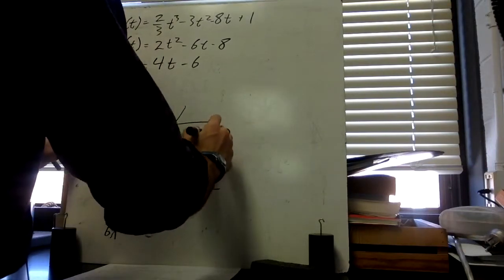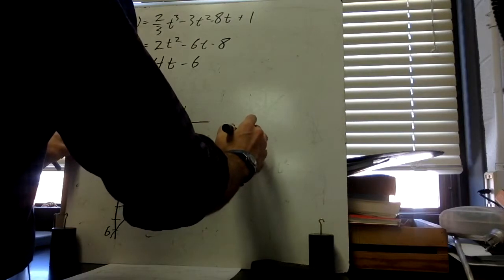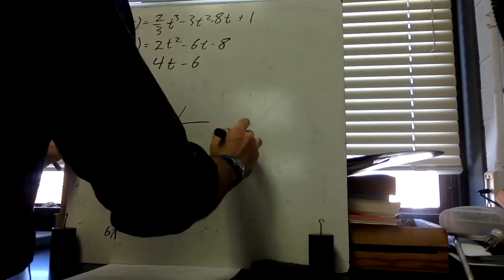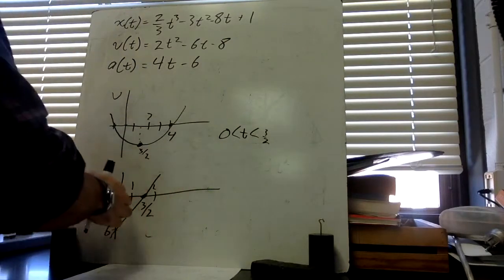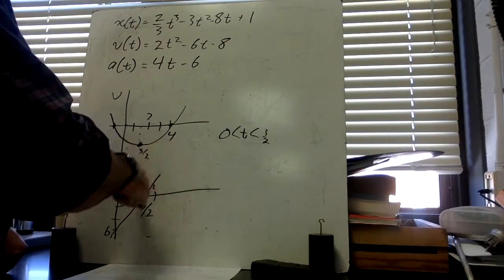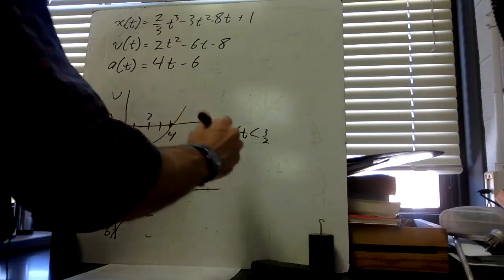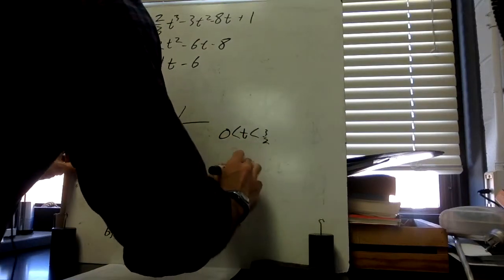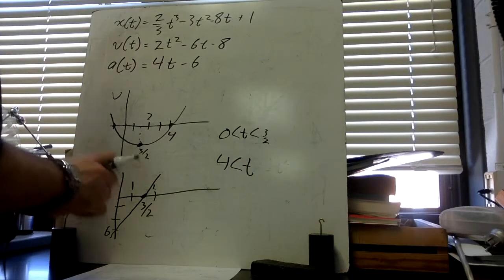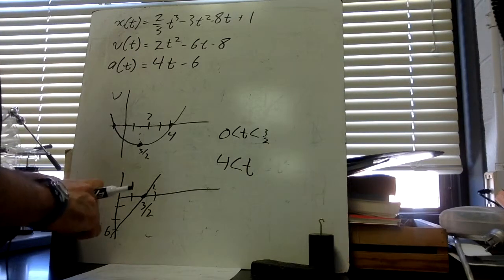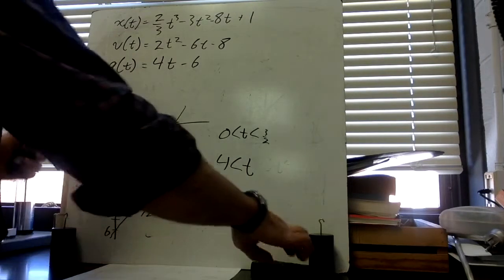So where do they have the same sign? From time zero, when the time is greater than zero but less than 3/2, they have the same sign—they're both negative. But then this goes positive and this is still negative. And then also when t is greater than 4, they both have the same signs. So that's example one.